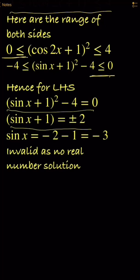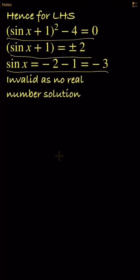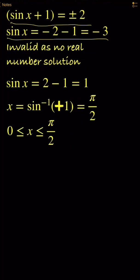Therefore sin x + 1 can be ±2. The negative 2 is invalid for the real number solution. So sin x + 1 equals 2, sin x equals 1, x equals π/2.